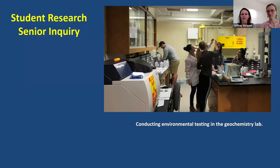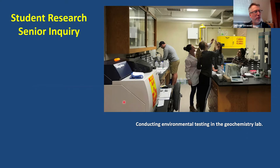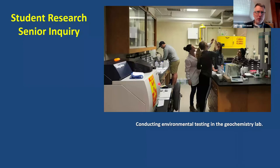We were doing some testing in the geochemistry lab. This machine in the foreground is our X-ray fluorescence spectrometer that allows us to analyze the chemistry of water samples, rock samples, soils — anything like that. We just crush it up, put it in, and we can get the elemental breakdown of what's in there. It's a really powerful instrument and most of our students use this in some capacity.